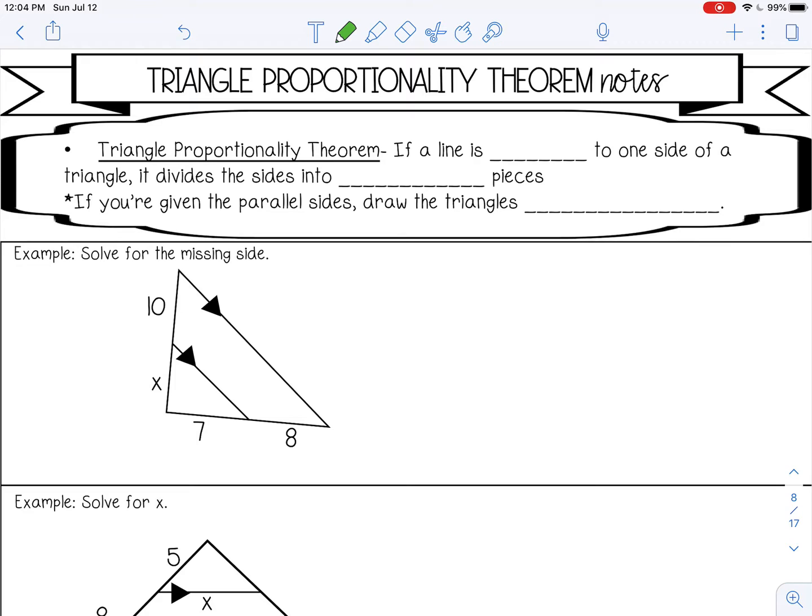So if a line is parallel to one side of a triangle, it divides the sides into proportional pieces. If you're given the parallel sides, you want to draw the triangles separately. I'll show you what that means when we get to the second example.